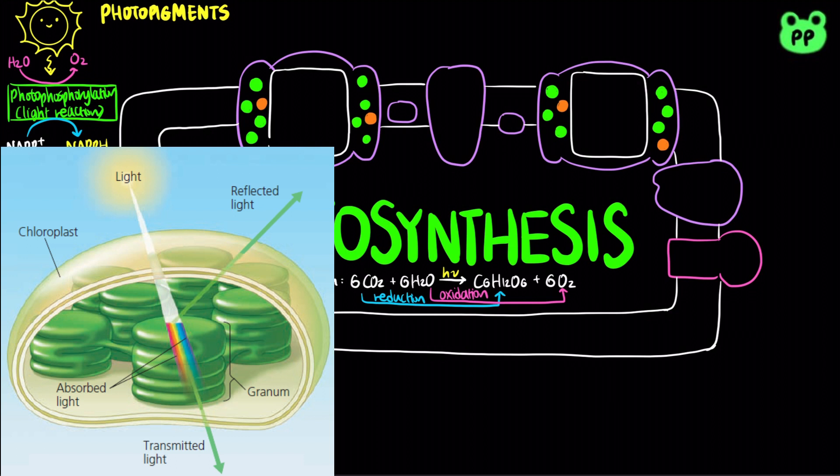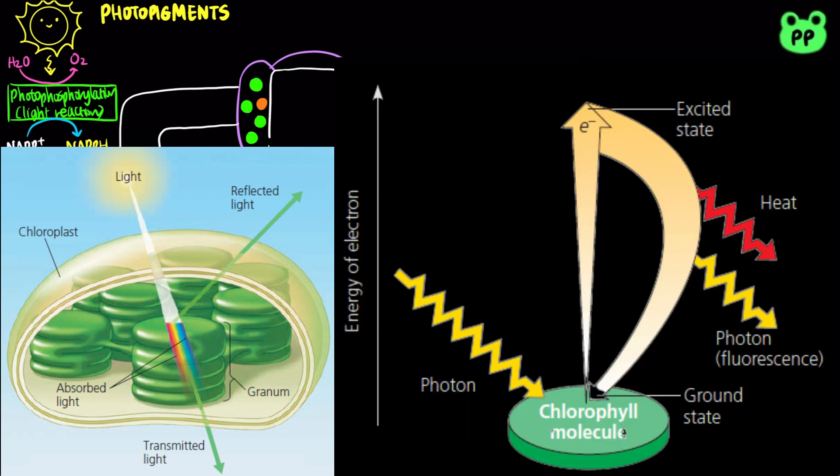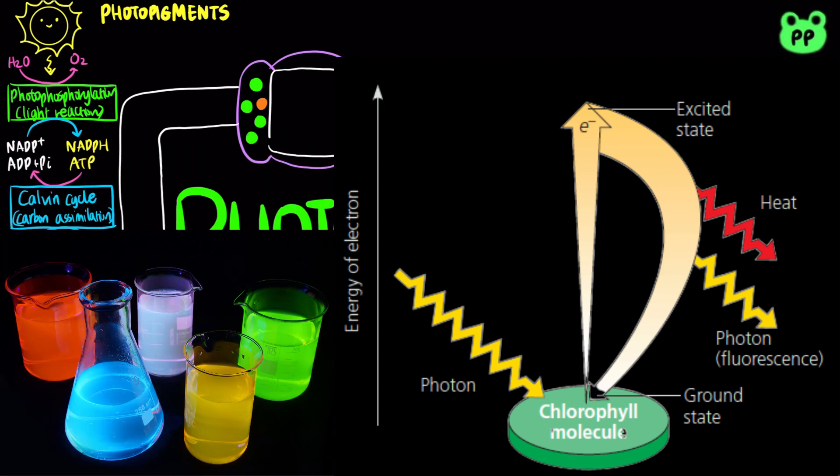Wavelengths that are not absorbed are reflected or transmitted, which is the color that we detect. When a photopigment absorbs light, it goes from a ground state to an excited state, which is unstable. When excited electrons decay to the ground state, photons are given off, resulting in an afterglow known as fluorescence.